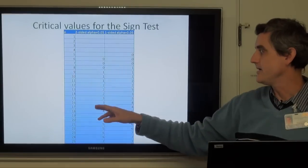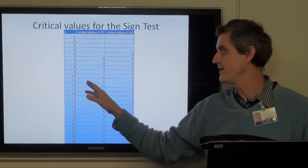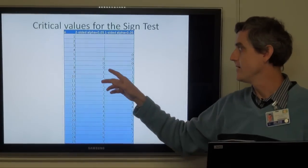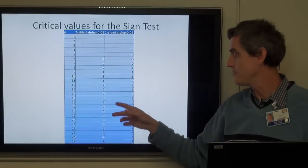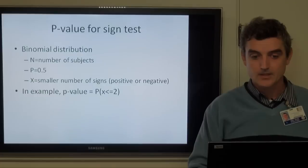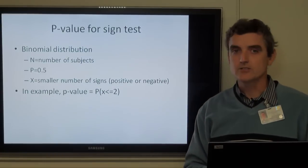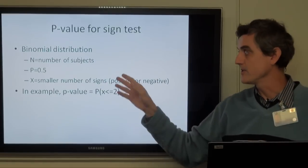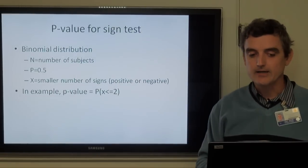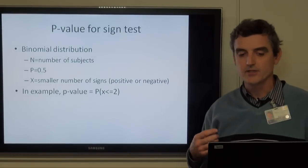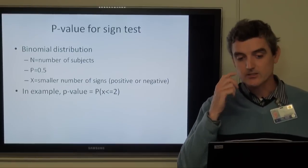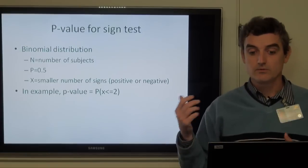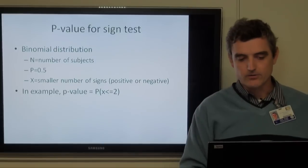These are the critical values for the sign test — it's pretty difficult to reject with a small sample size. For a one-sided alpha with n = 8, the critical value is just one; as n increases it gets higher but not by much. The p-value for the sign test is just the binomial distribution where n is the number of subjects, probability of success is 0.5, and x is the smaller number of signs. So we calculate the probability of having two successes or fewer under those conditions.